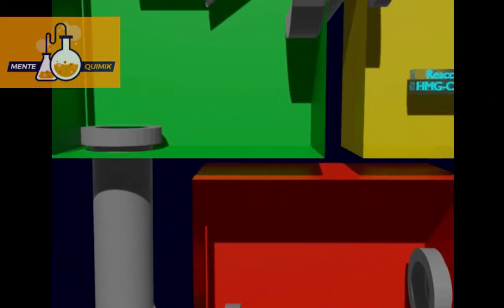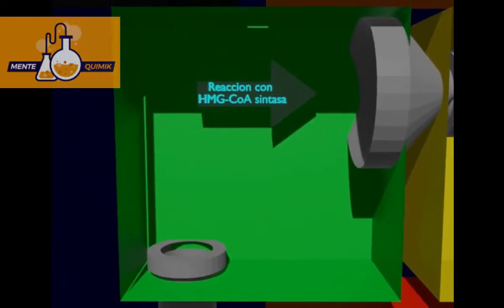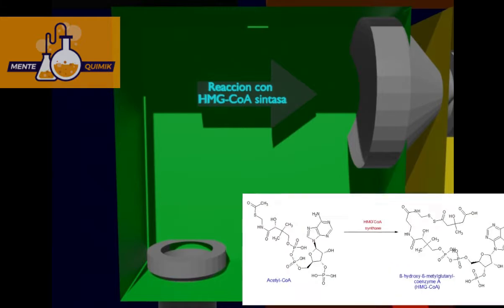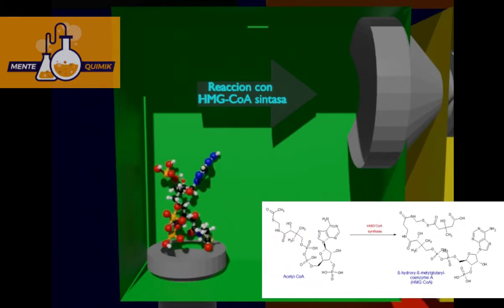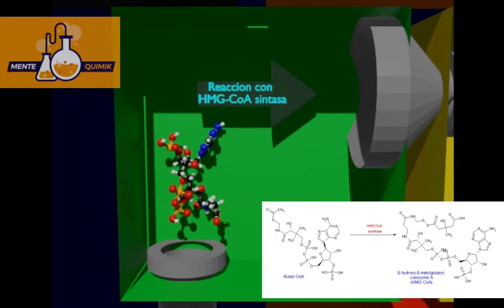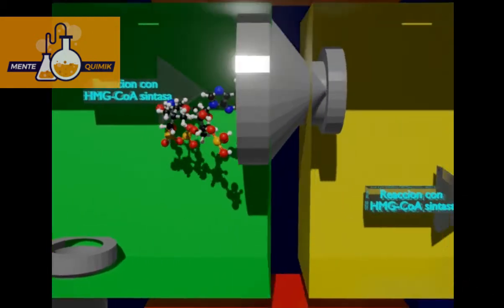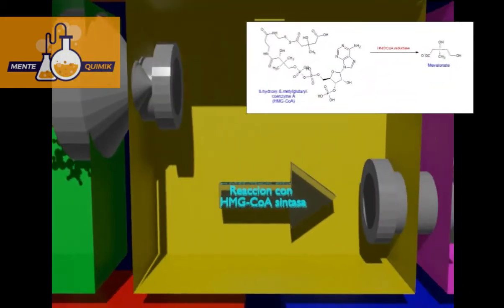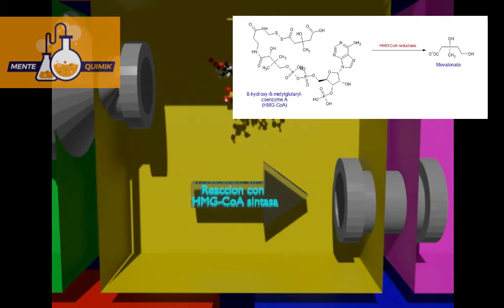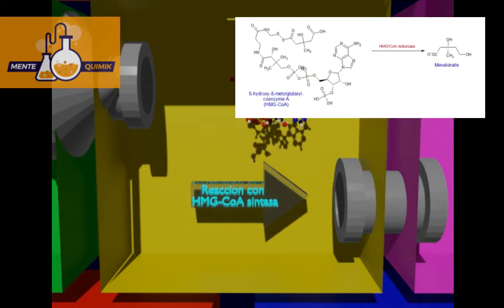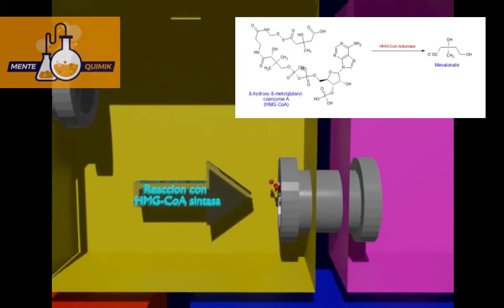Acetyl-CoA reacts with the enzyme beta-hydroxy-beta-methylglutaryl-coenzyme A synthase to form beta-hydroxy-beta-methylglutaryl-coenzyme A (HMG-CoA). This molecule is then reduced with HMG-CoA reductase to synthesize mevalonate.